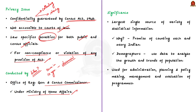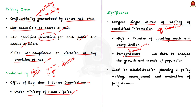Why is this population census so significant? Firstly, it is the largest single source of a variety of statistical information on different characteristics of the people of India. Even the best sample surveys cannot beat the census data, because the population census carries the promise of counting each and every Indian. This is the reason why researchers and demographers use census data to analyze the growth and trends of population and make projections. Secondly, the information collected is used for administration, planning and policy making, and also for the management and evaluation of various government programs.